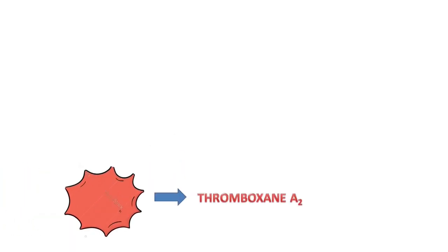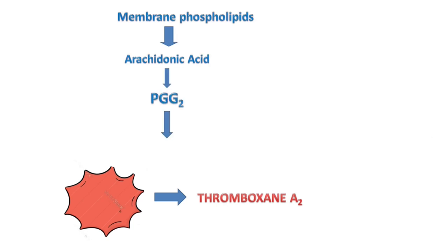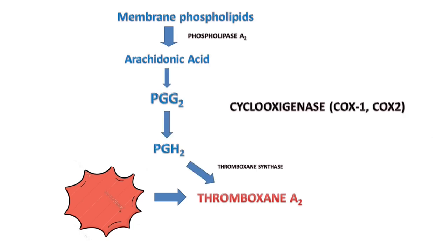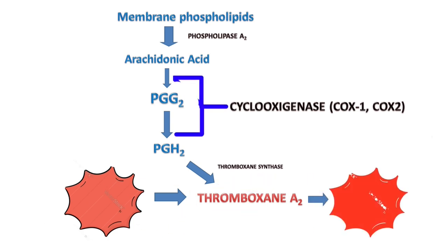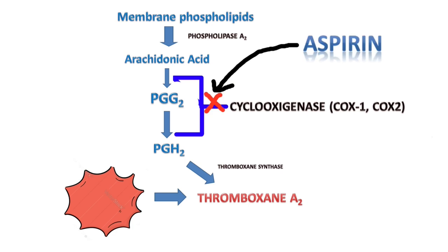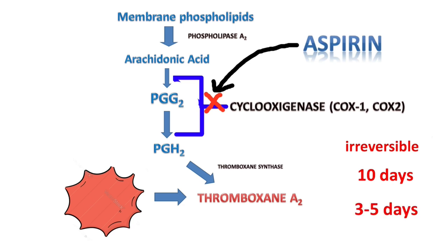One such released factor is thromboxane A2. It is synthesized by membrane phospholipids and binds to neighboring platelets, activating them. A common antiplatelet drug, aspirin, prevents the formation of thromboxane A2 by blocking the cyclooxygenase enzyme. This action is irreversible, and a platelet with a blocked cyclooxygenase pathway will not produce thromboxane A2 in its lifetime. Considering that the average platelet lifetime is 10 days, it roughly takes 3–5 days after the last dose of aspirin for platelet activity in the body to reach near-normal levels.